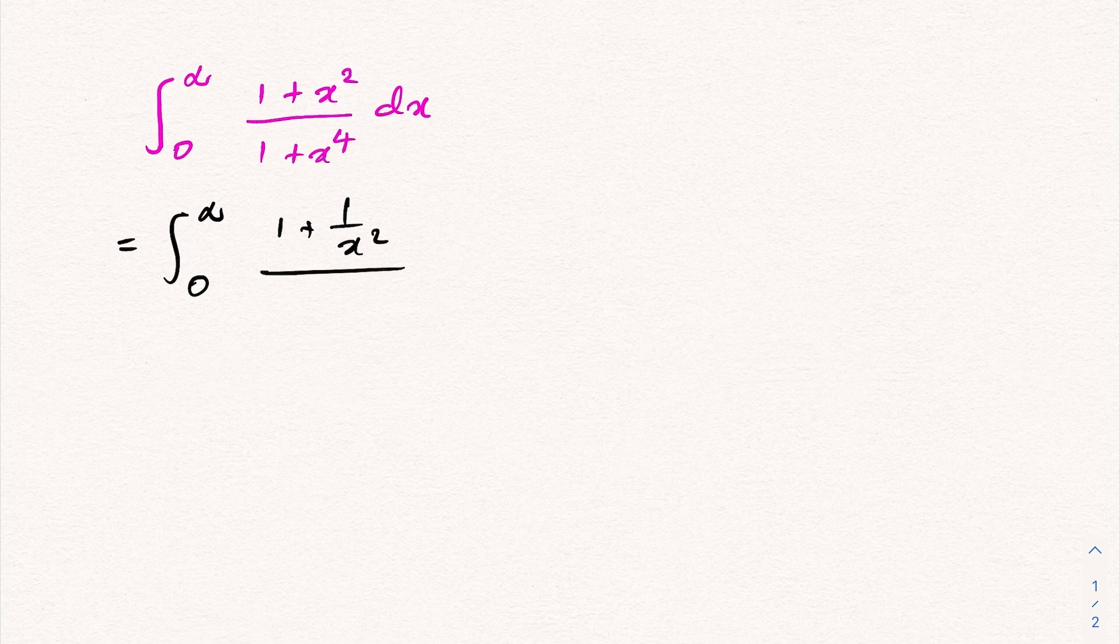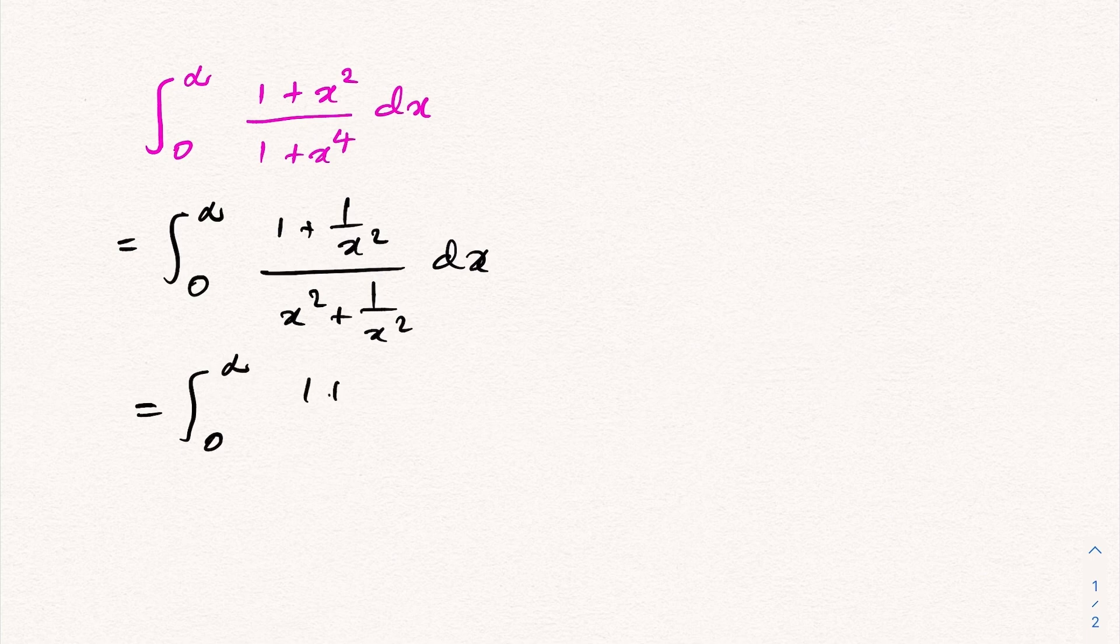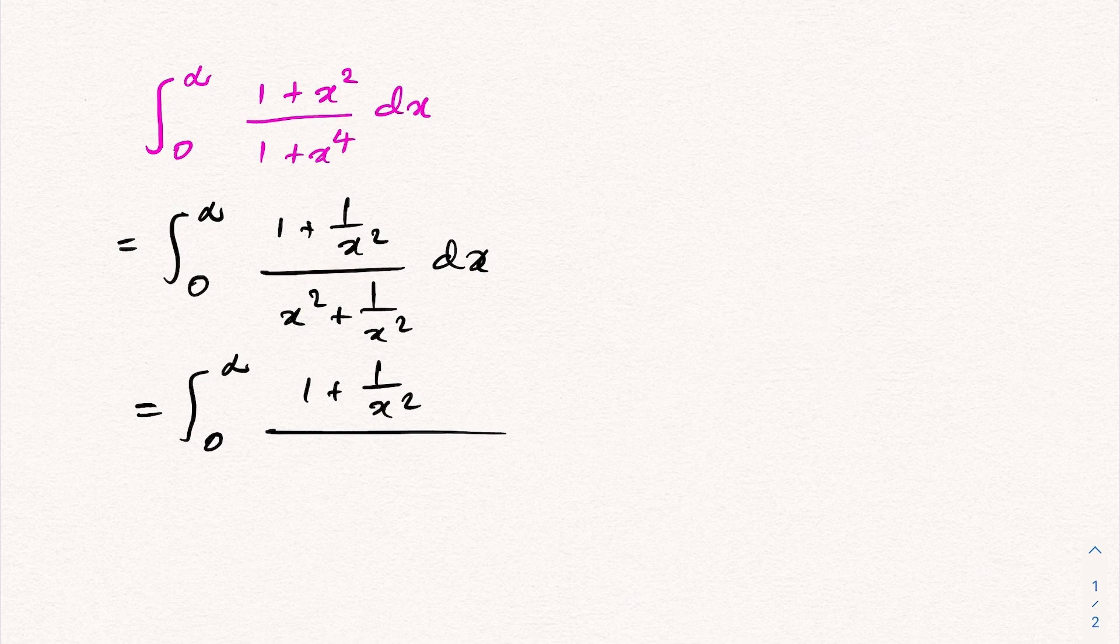Then, as the next step, the integral from 0 to infinity, 1 plus 1 over x square over, now the denominator we can write as a perfect square, x minus 1 over x, perfect square plus 2 dx.